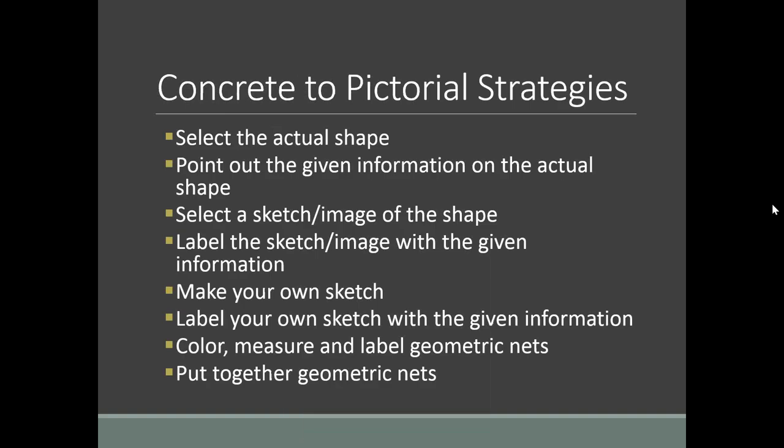Summary of concrete-to-pictorial techniques: with foam shapes, have students select the actual shape or use realia like tissue boxes, point out the given information on the actual shape, select a sketch or image of the shape, and label the sketch with given information. Then have them make their own sketch and label it. Finally, with geometric nets, have students color, measure, and label the nets and put them together.